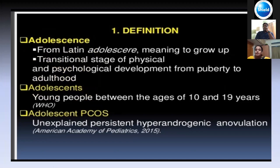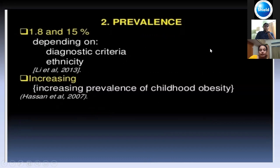Adolescence is traditionally defined as 10 to 19 years of age. Adolescent PCOS is described as an unexplained, persistent, hyperandrogenic condition. The prevalence now ranges between 1.8 to 15%. The wide range is because it is sometimes overdiagnosed or underdiagnosed, depending on the type of criteria used and also ethnicity.